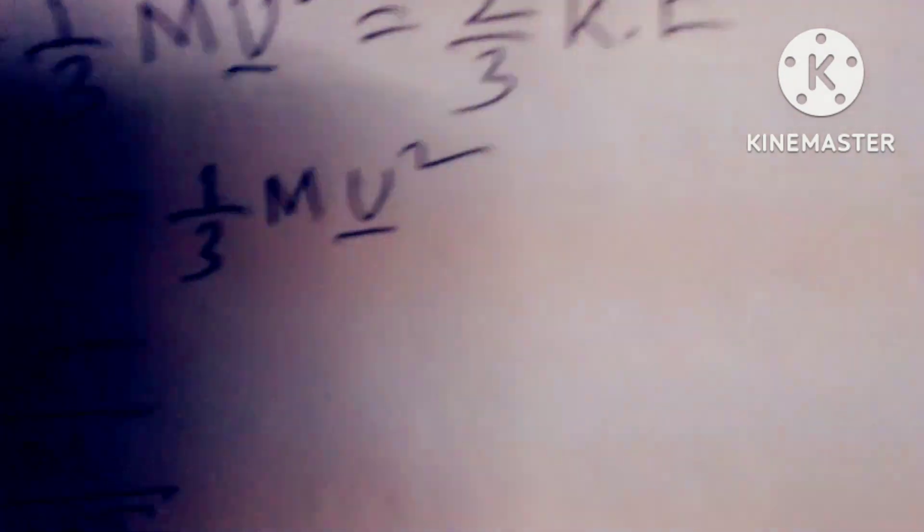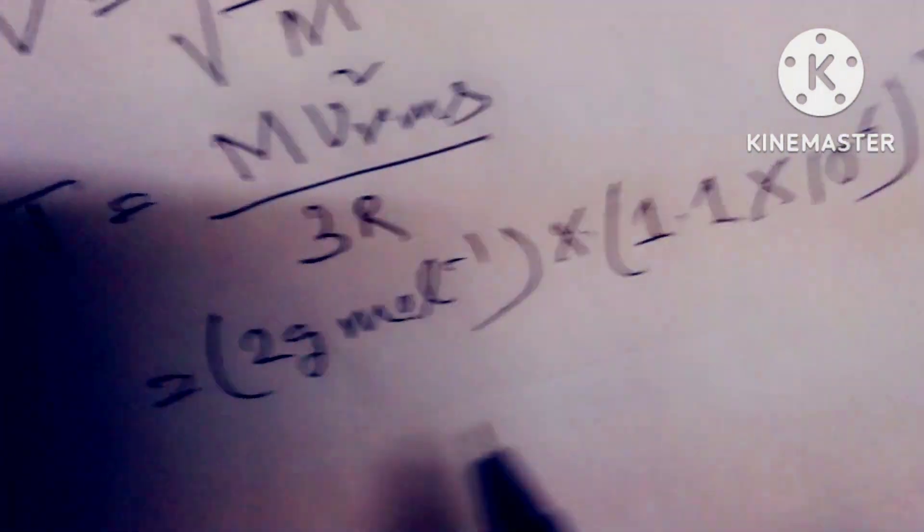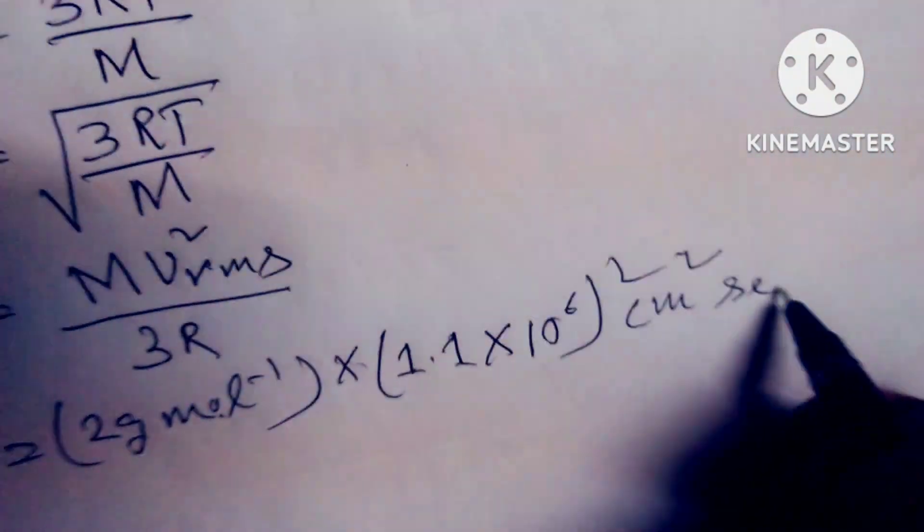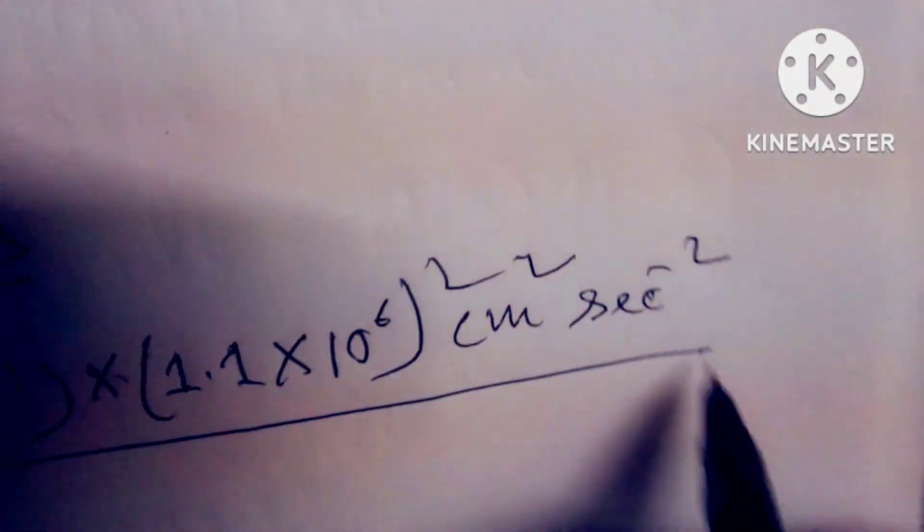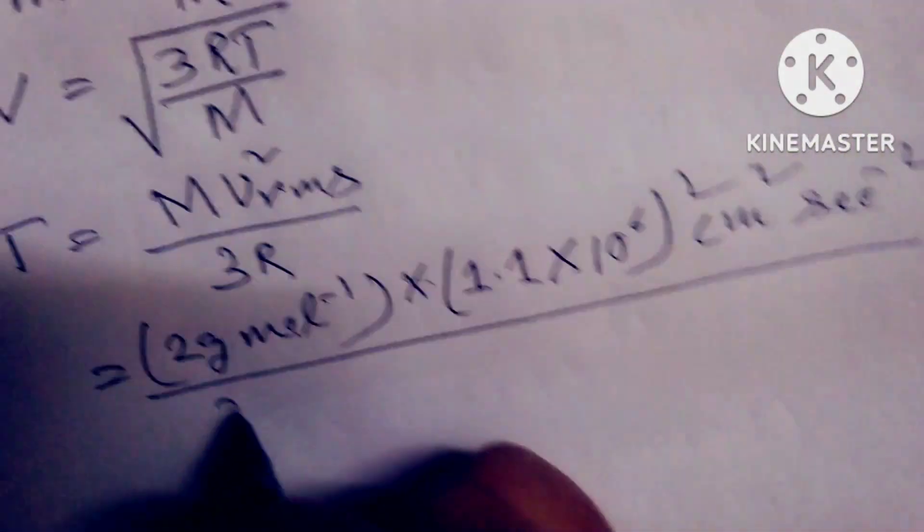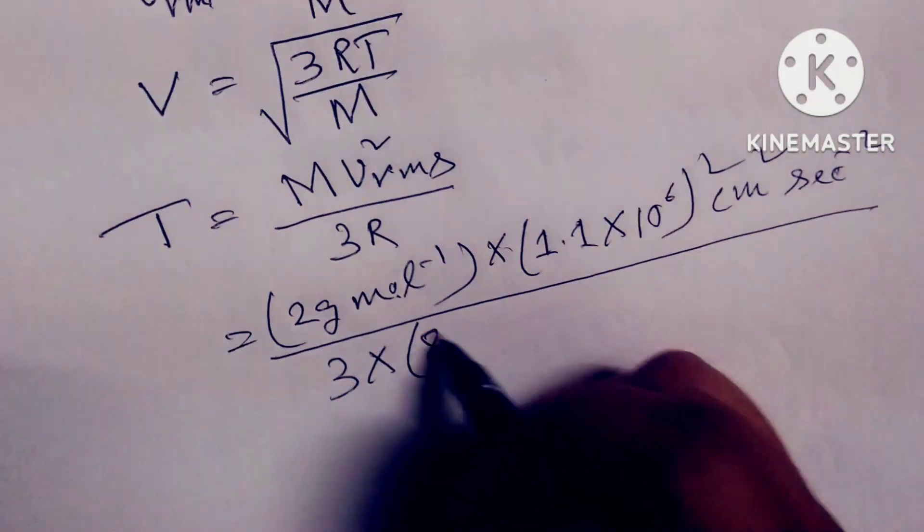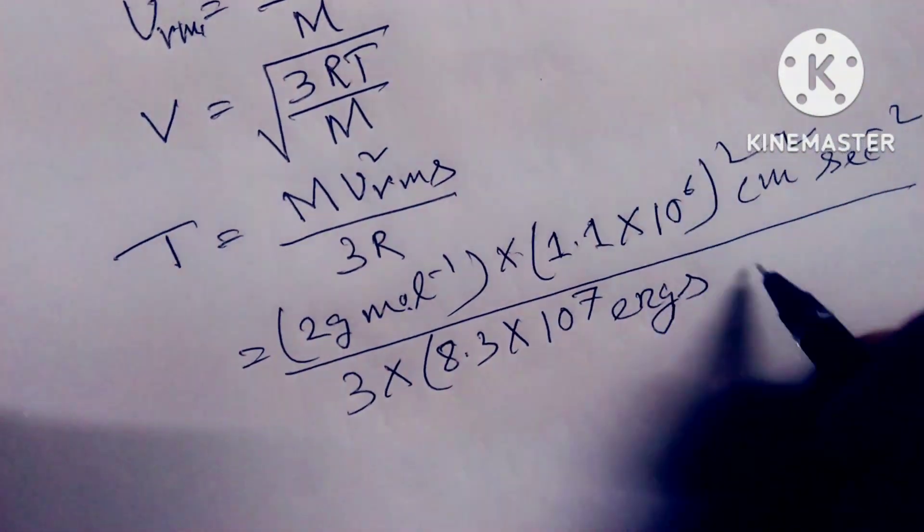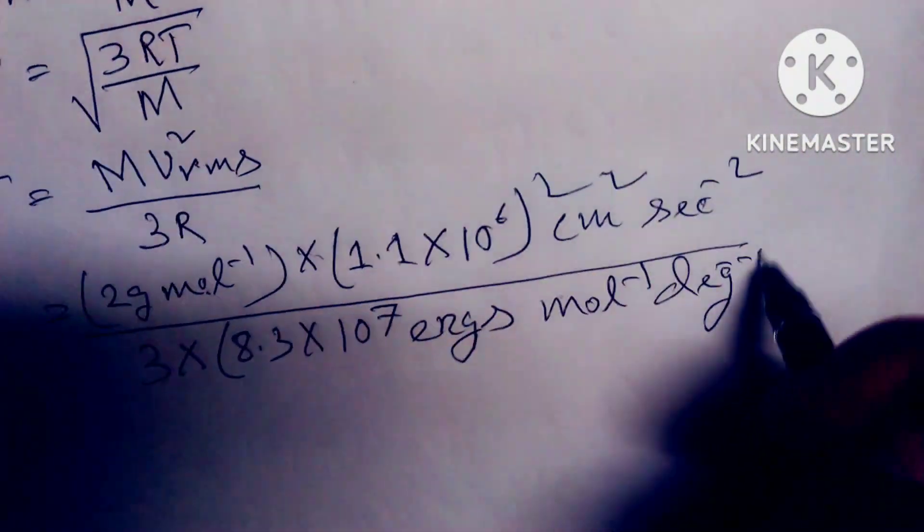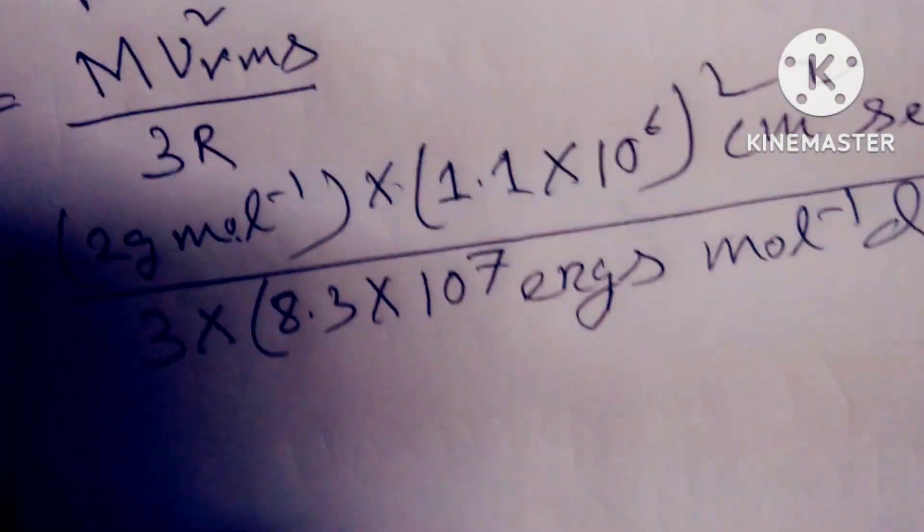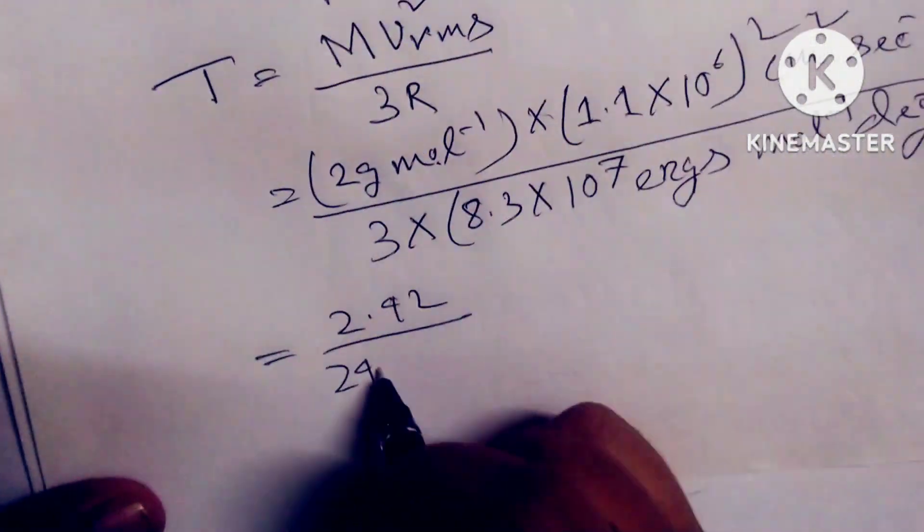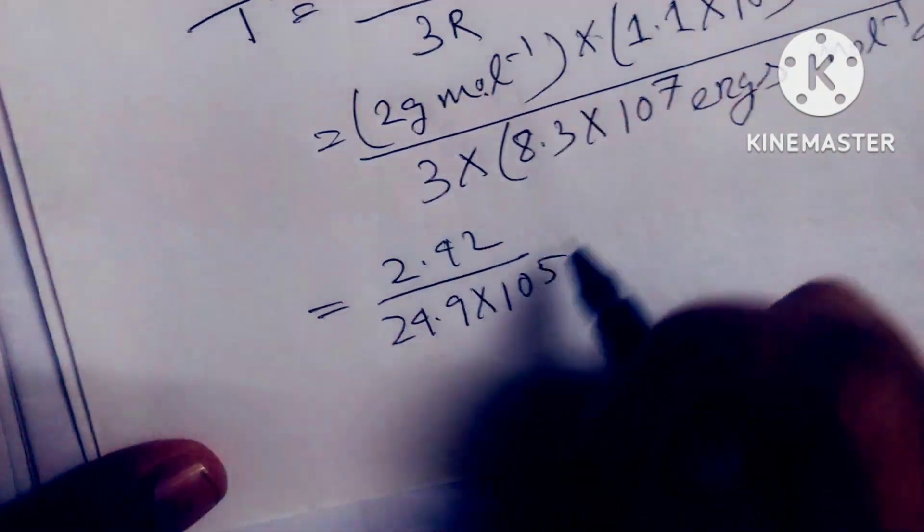So I'm putting V² RMS equal to (1.1×10⁶)² centimeters squared per second squared, times 2, times 3, times the gas constant value 8.3×10⁷ ergs per mole per degree. I get the value equals 2.42 divided by 24.9×10⁵.